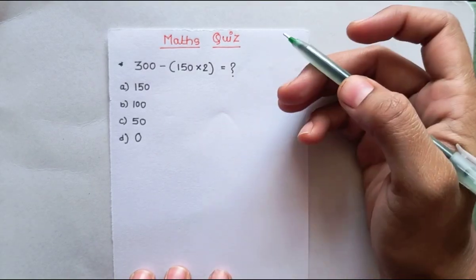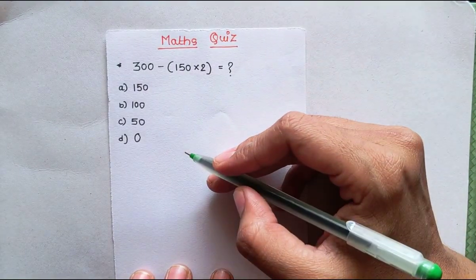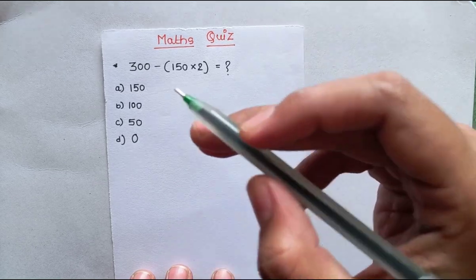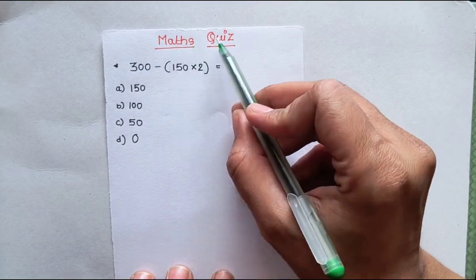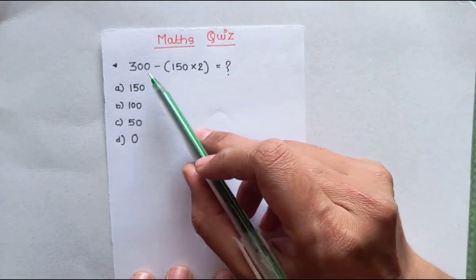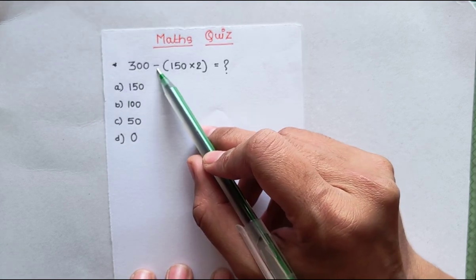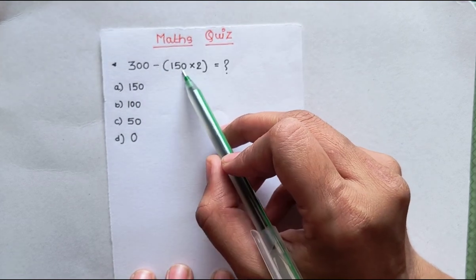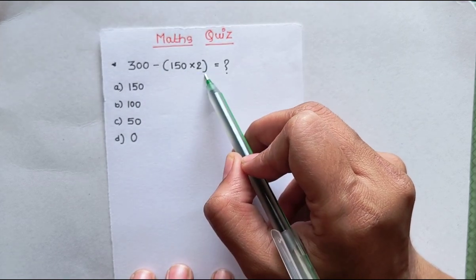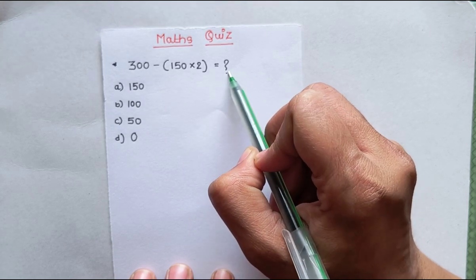Hello friends, welcome back to my channel. If you are new to my channel, kindly subscribe. Today we will take a math quiz. Our question is: 300 minus, in bracket, 150 into 2, bracket complete, equals what?